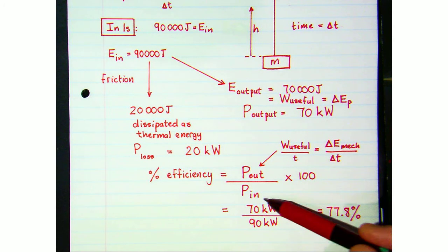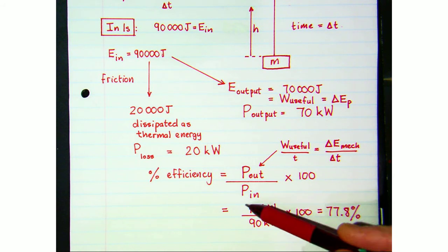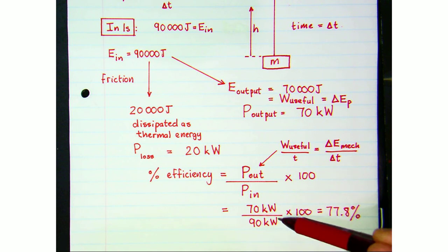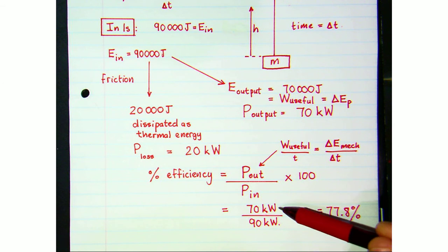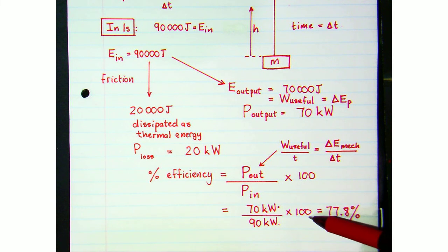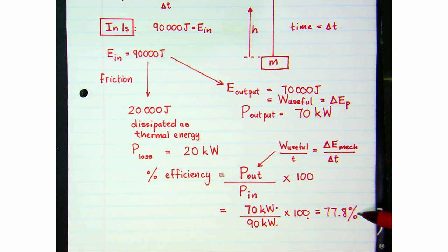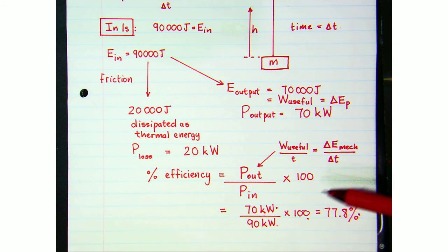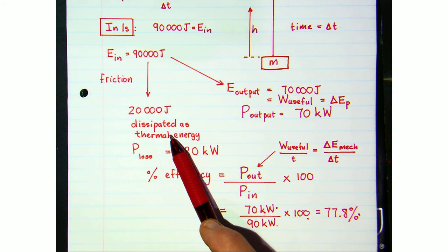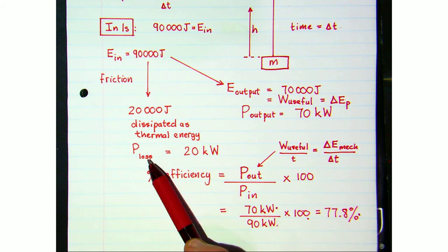That's the useful work being done per second, and the input power is the power rating of the motor — what it can supply and convert to useful energy per second — multiplied by 100. That gives us an efficiency of 77.8 percent. No motors are 100 percent efficient because energy is being lost through friction to thermal energy, resulting in a power loss while the motor is doing work.